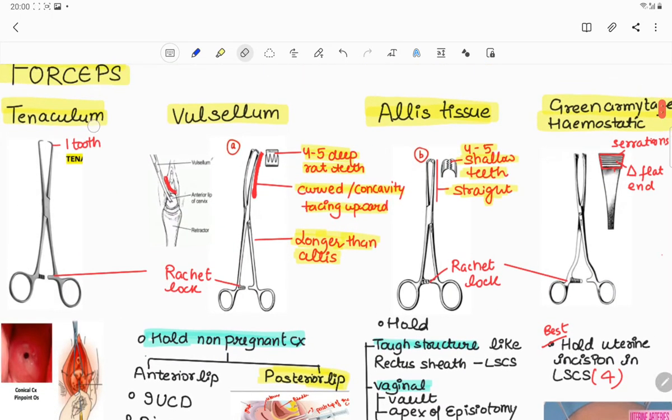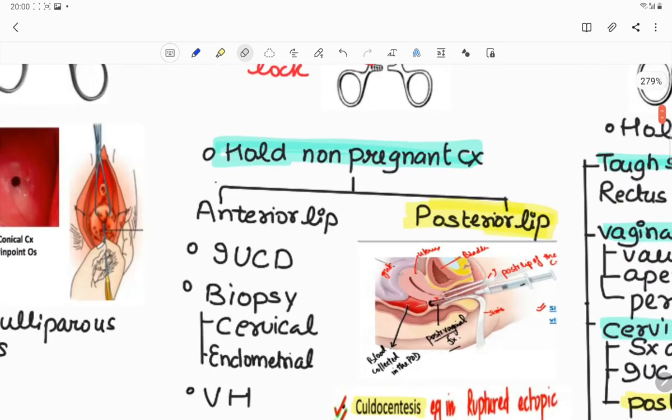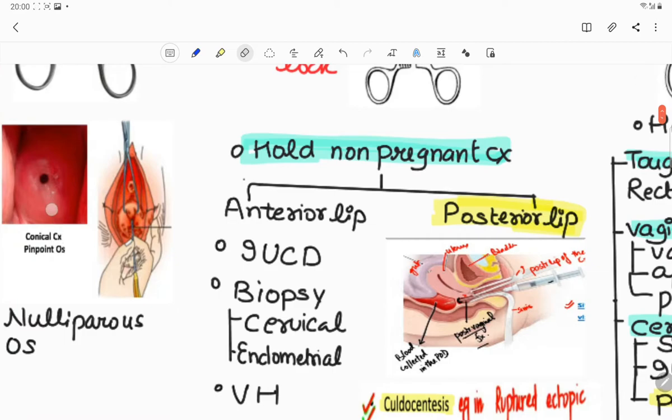Number three forceps is tenaculum forceps. It is same as Valsellum forceps but instead of four to five deep teeth it contains one tooth, and therefore it is used to hold the conical or pinpoint os, for example in nulliparous os.